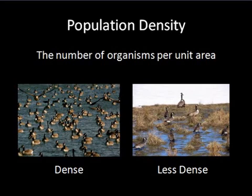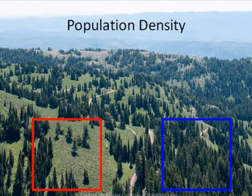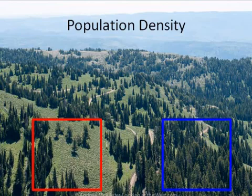On the left we see we have a more dense population, because there are more geese present in that area than on the right, where the population is less dense. So here we have a red and a blue box — they're both the same size. Write down which color box has the more dense population of trees, and which has the less dense population of trees.